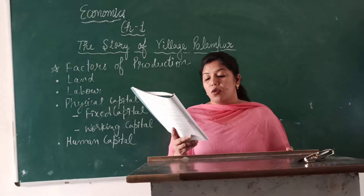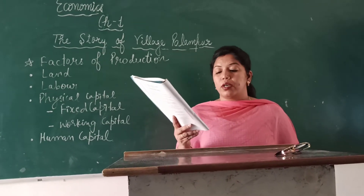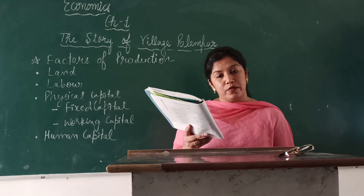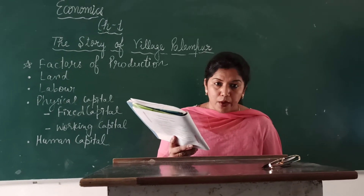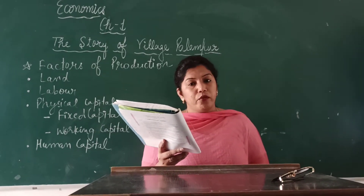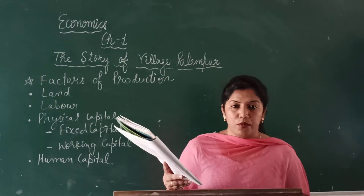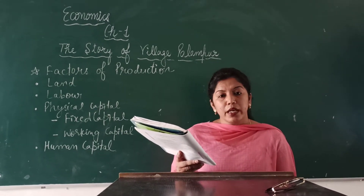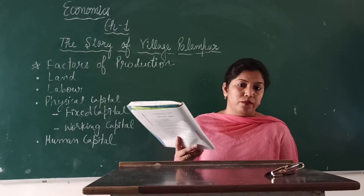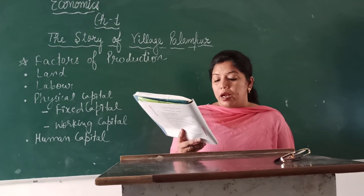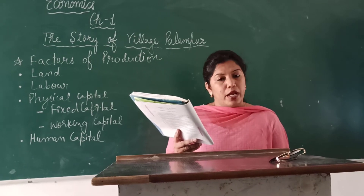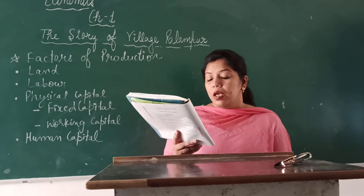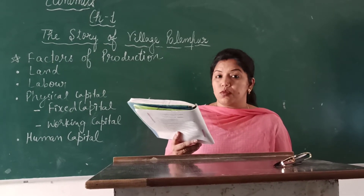This village has about 450 families belonging to several different castes. The 80 upper caste families own the majority of land in the village. These 450 families belong to different castes, and the upper caste families have the most land. Their houses are quite large.